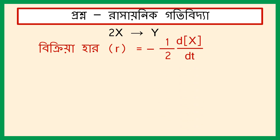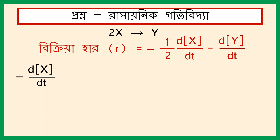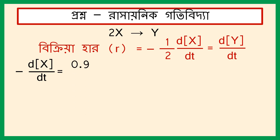R = -d[X]/dt. R = d[Y]/dt. Vikriyar garrhocto X-er: minus d[X]/dt. Suman 19.9; Y-er vikriyar prathamik garrhocto minus 19.3.